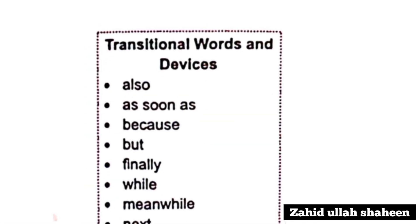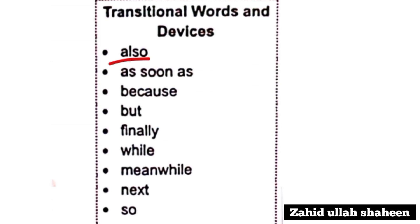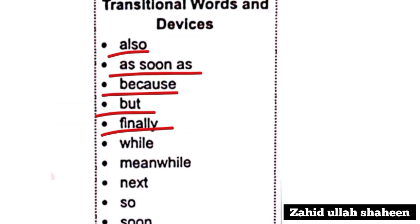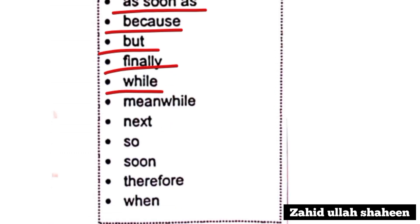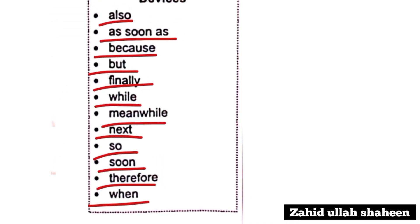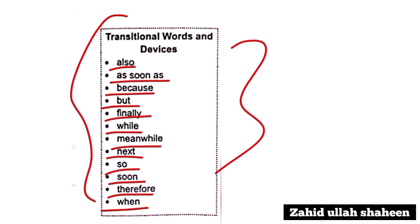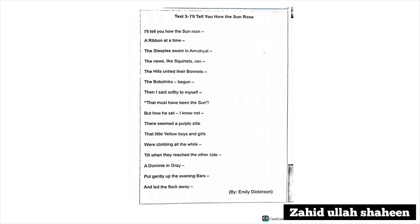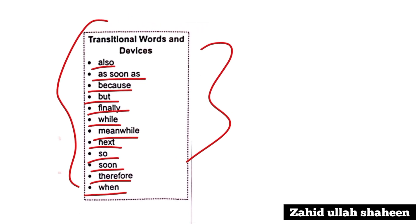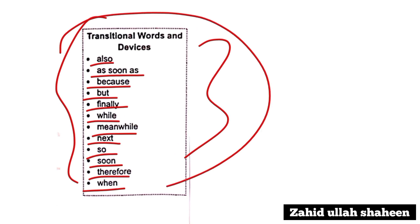Transitional words and devices include: as soon as, because, but, finally, while, next, therefore, when. These are transitional devices used to connect ideas in writing.